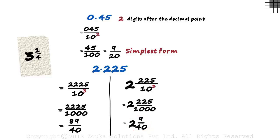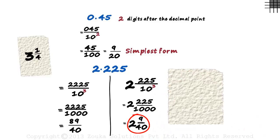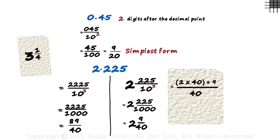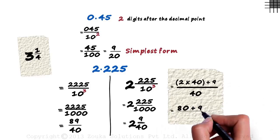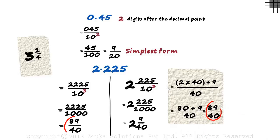Just to check your answer, it's always recommended that you convert this into a normal fraction and verify. This would equal 2 multiplied by 40 plus 9 by 40. That would equal 80 plus 9 by 40, which equals 89 by 40. Same as the answer we got earlier.